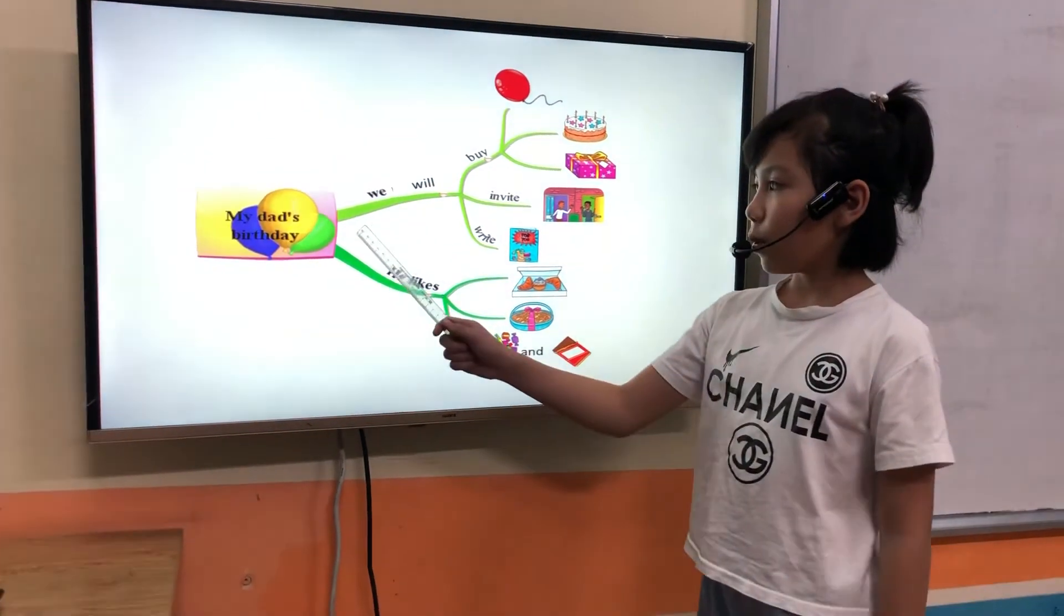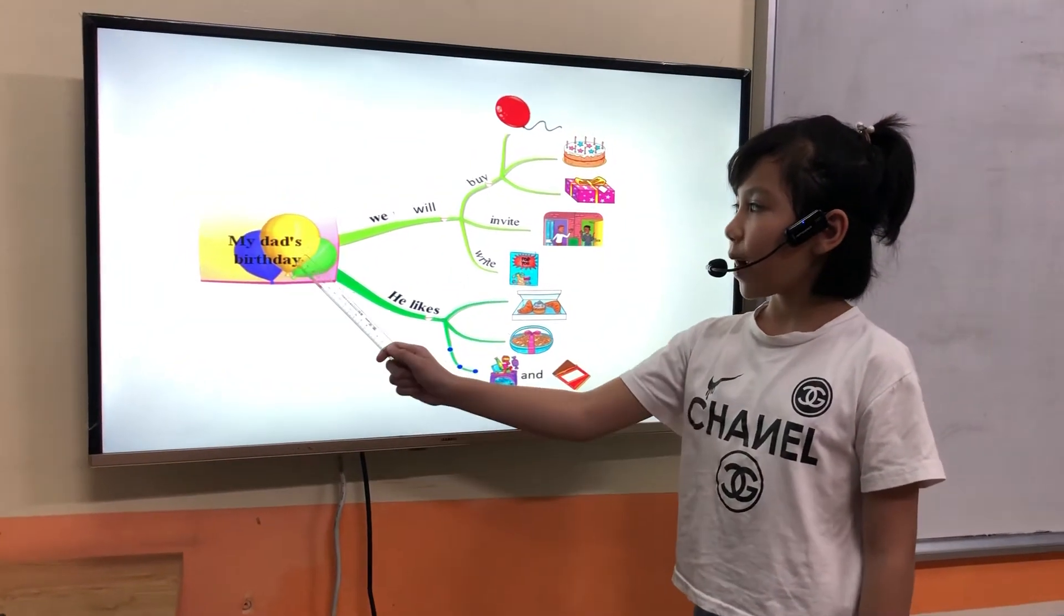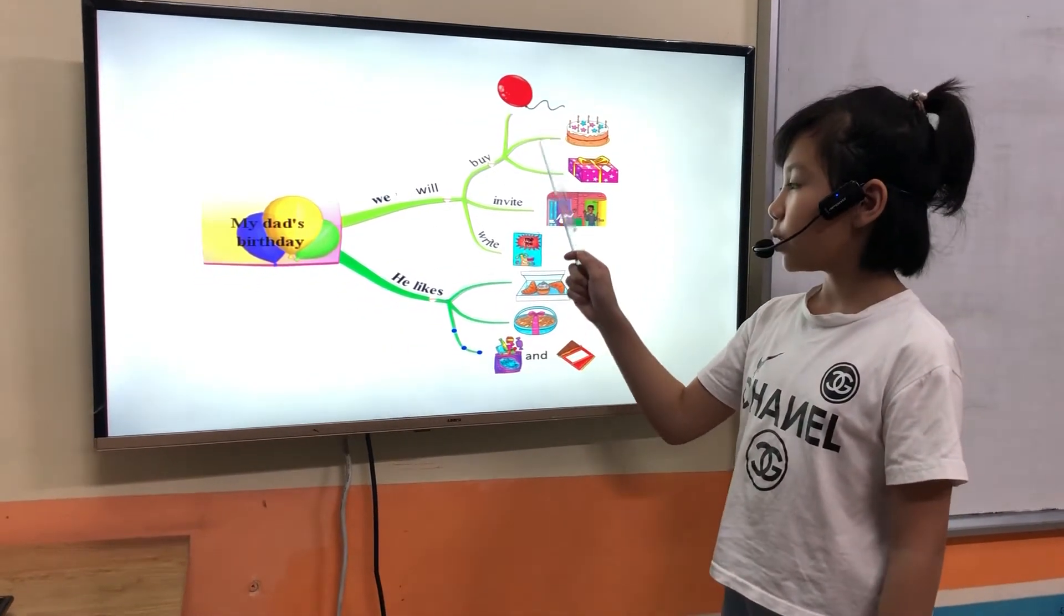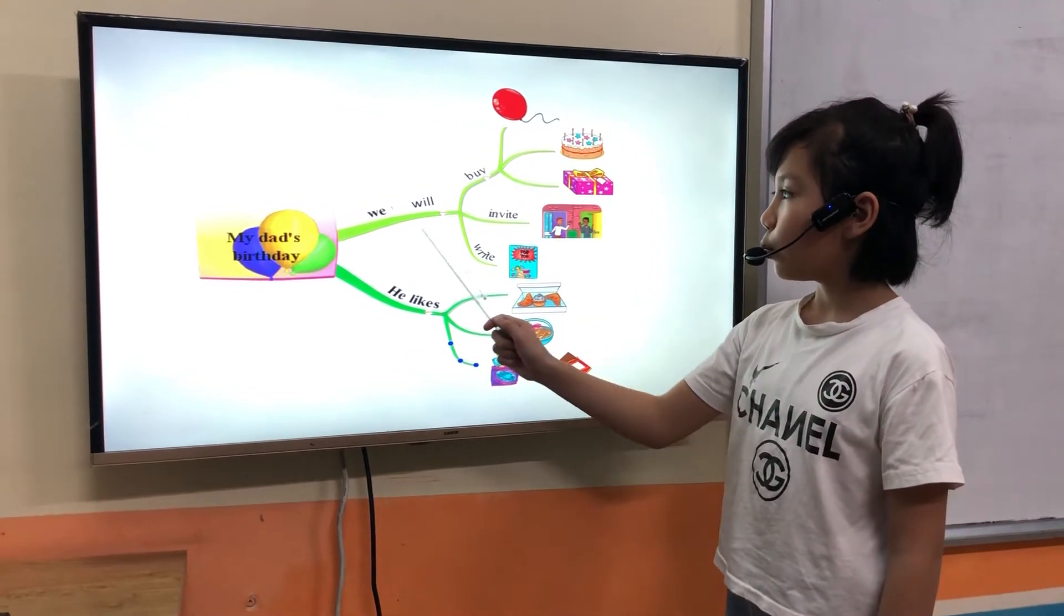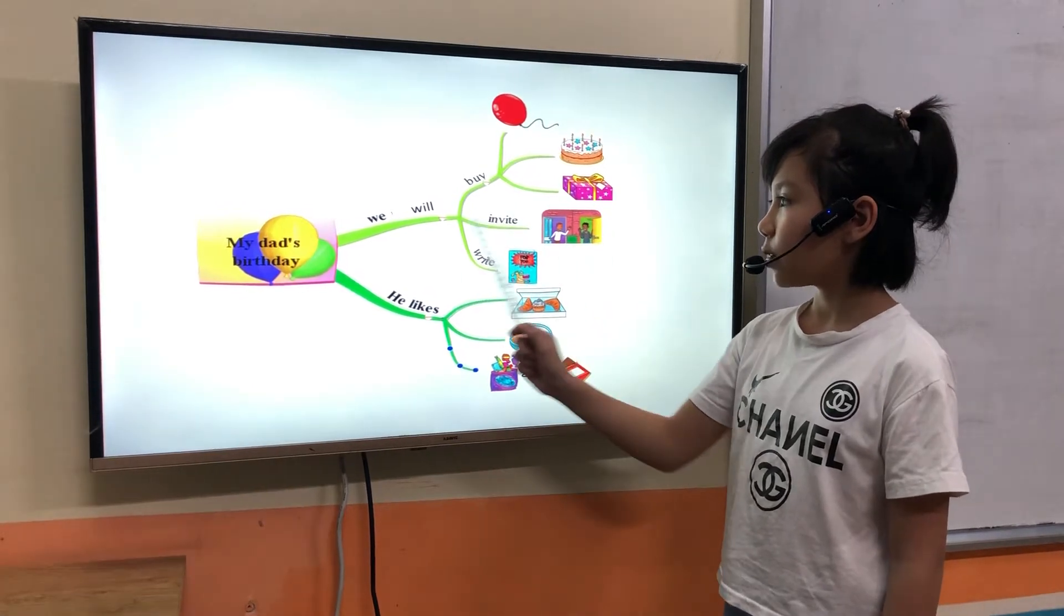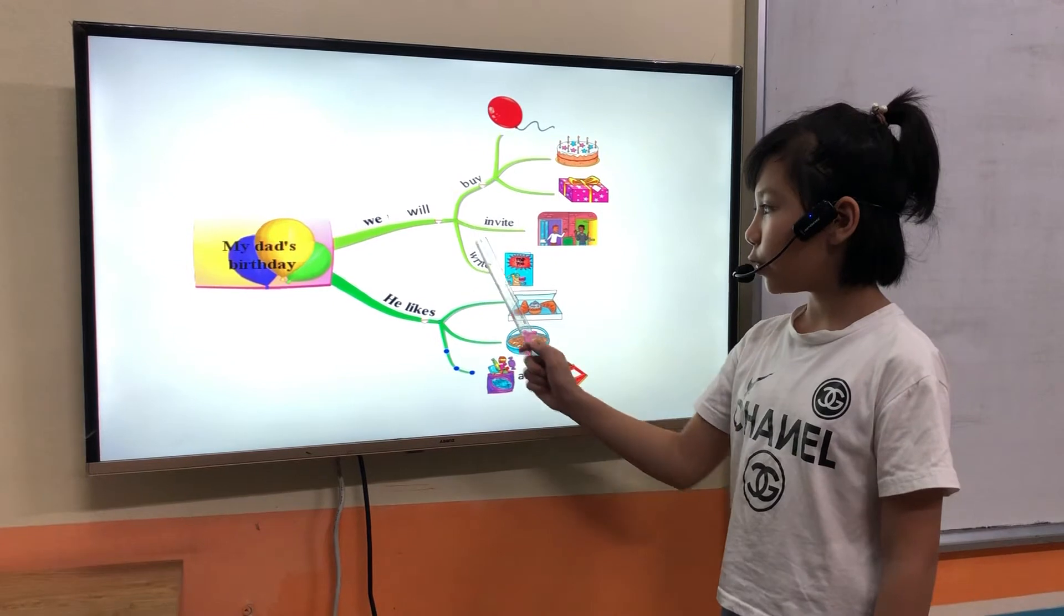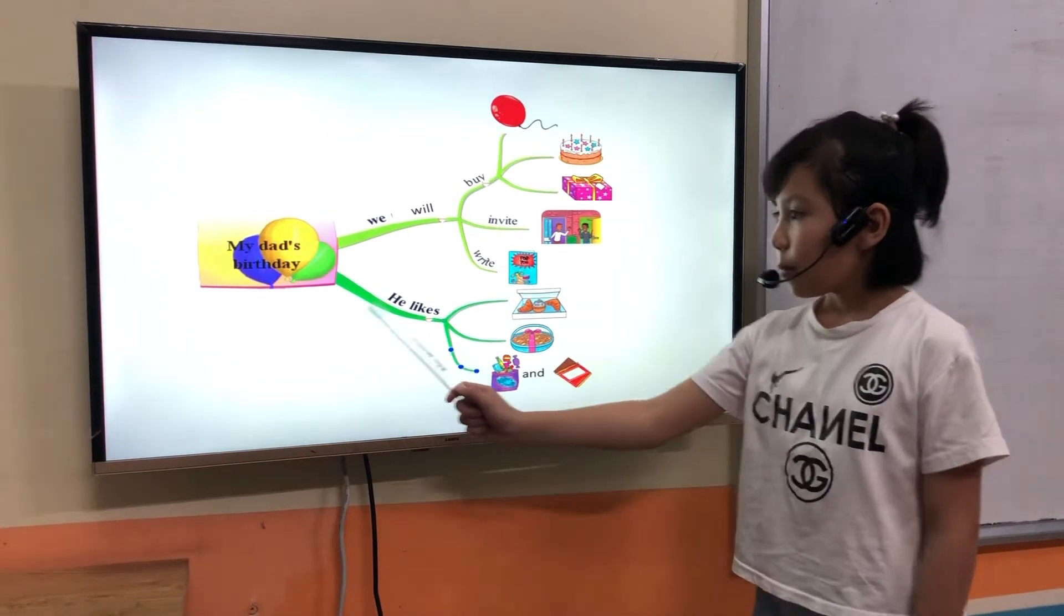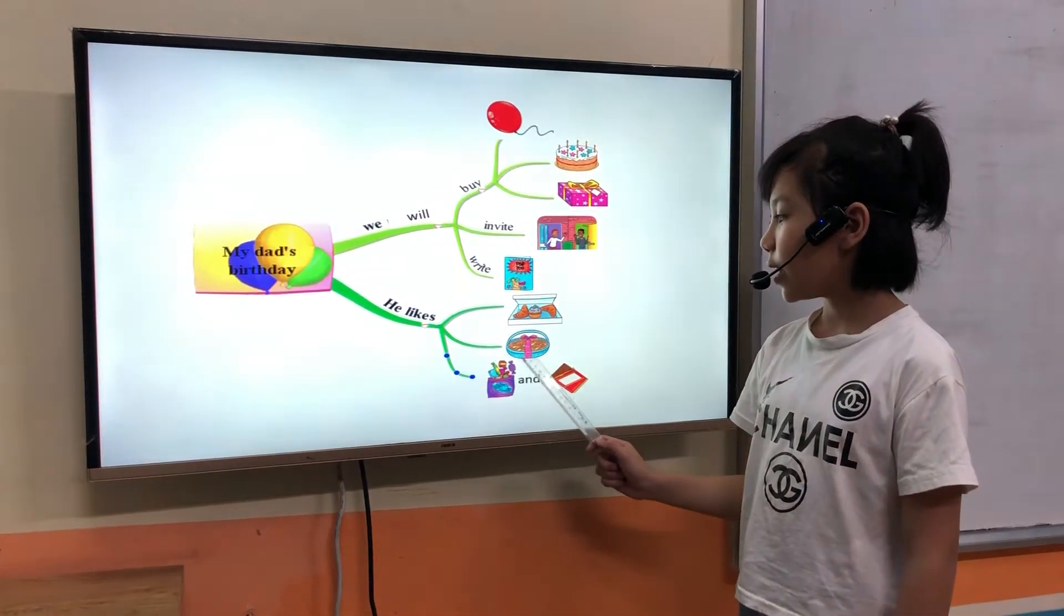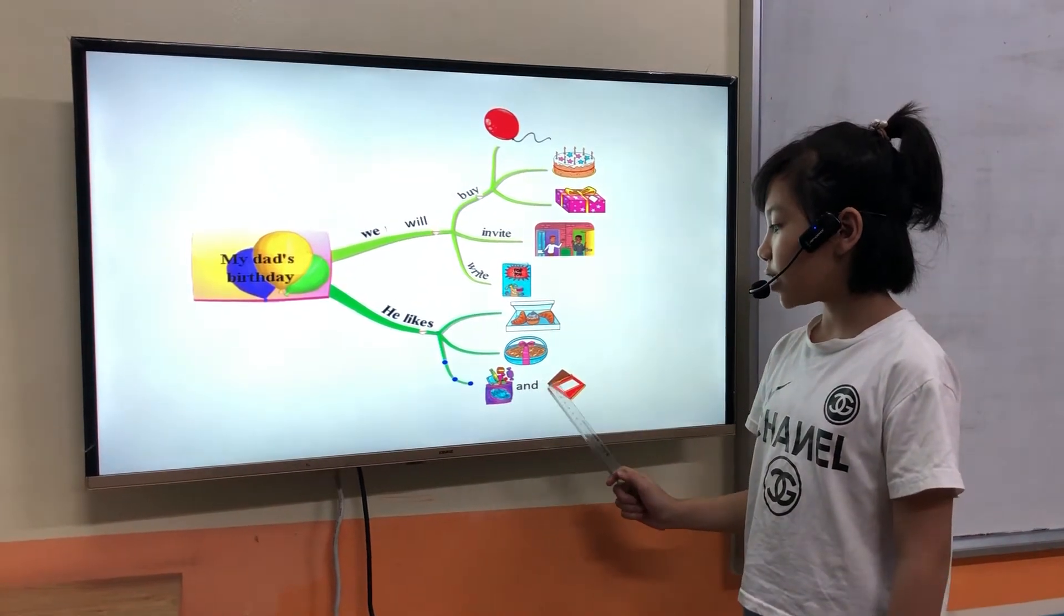Tomorrow we will celebrate dad's birthday. We will buy balloons. We will buy a cake. We will buy a present. We will invite neighbors. We will write cards. My dad likes pastries and nuts, candy and chocolate.